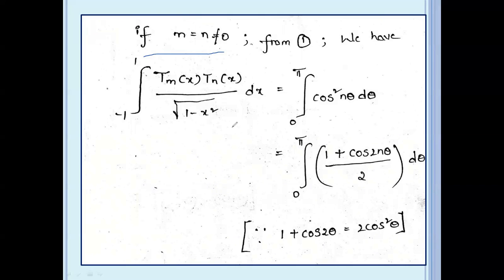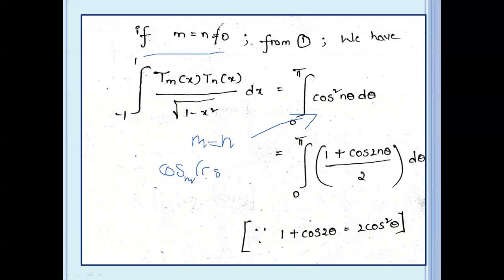Now taking the case where m equal to n: the integral from minus 1 to 1 of Tm(x) times Tn(x) dx divided by root(1 minus x squared) equals integral from 0 to π of cos² nθ dθ.